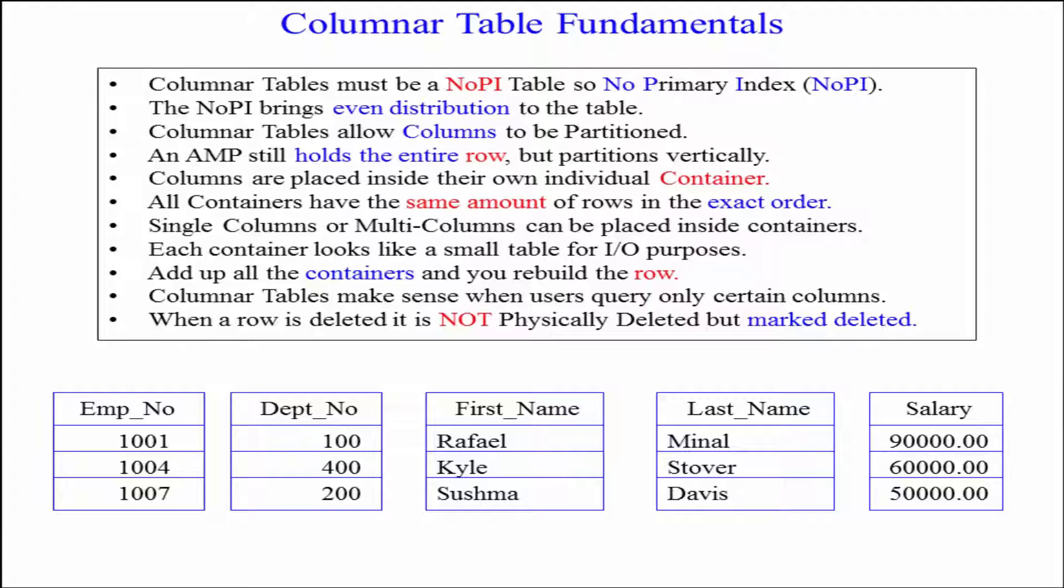Columnar tables make sense when users query only certain columns in the table. When a row is deleted, it is not physically deleted, but marked deleted.